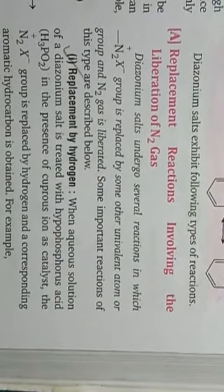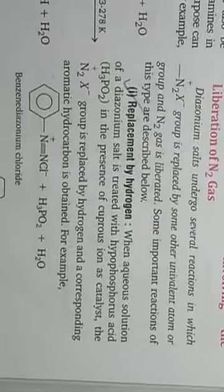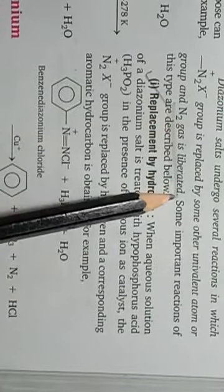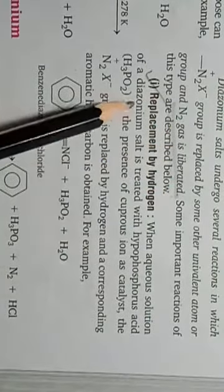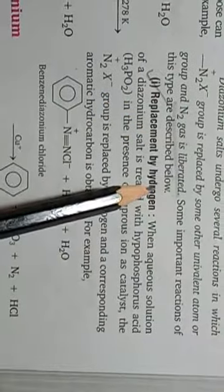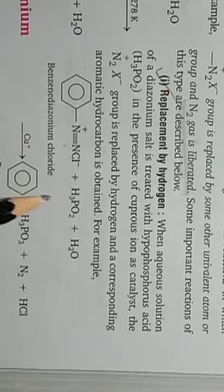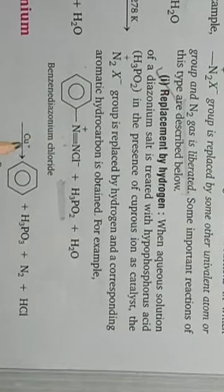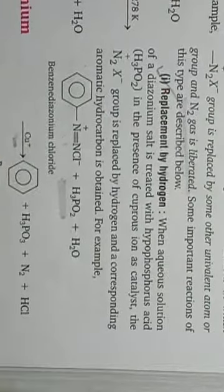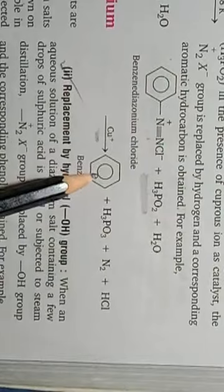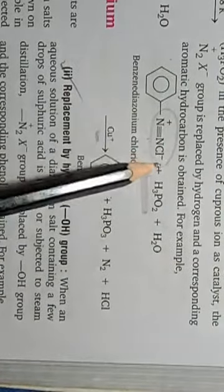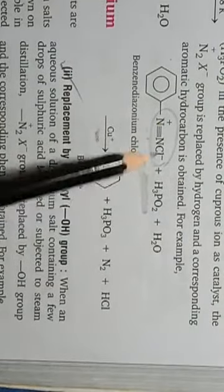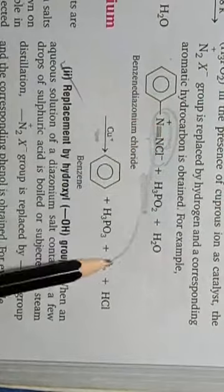In the first type of chemical properties, nitrogen gas is liberated as a byproduct. The first reaction is replacement by hydrogen: when diazonium chloride in aqueous conditions is treated with hypophosphorus acid in the presence of cuprous ion as catalyst, benzene is formed. The diazonium halide group is displaced by hydrogen, and N₂ is released as a byproduct.